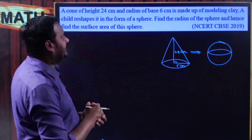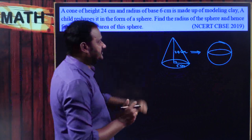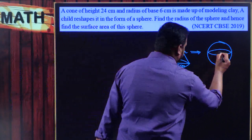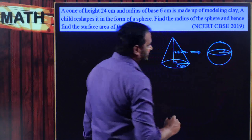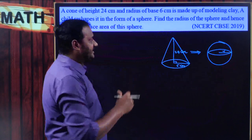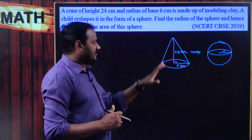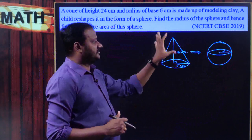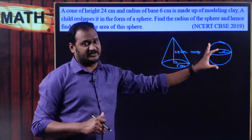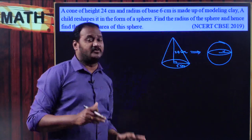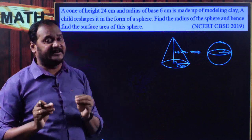What is required? You need to first find out the radius of the sphere. In order to find the radius of the sphere according to the given problem, this solid is transformed into the other solid. It means the volumes of both figures remain unchanged.